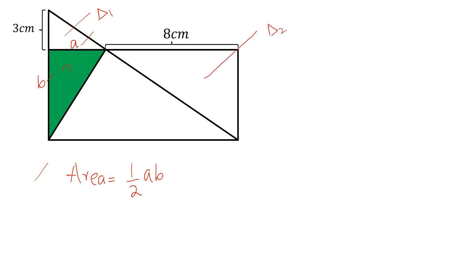These two triangles are similar. Why are these two triangles similar? Because this angle is equal to this angle and this right angle is equal to this right angle.